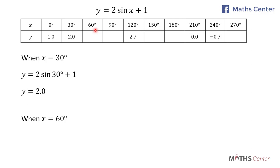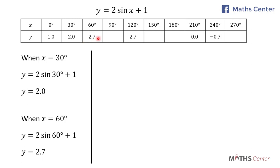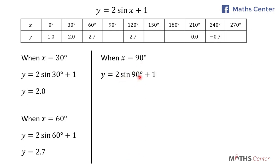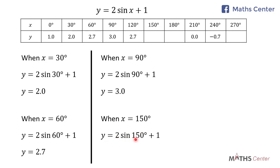When x is equal to 60 degrees, y is equal to 2 sin 60 degrees plus 1, which gives us 2.7. When x is 90 degrees, y is equal to 2 sin 90 degrees plus 1, which gives us 3.0. When x is equal to 150 degrees, y is equal to 2 sin 150 degrees plus 1, which gives us 2.0.